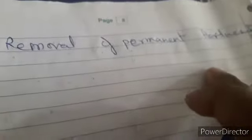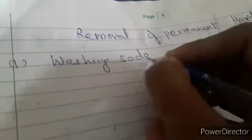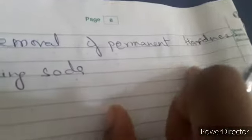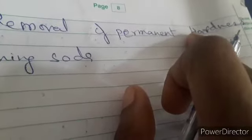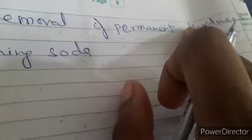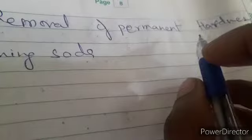We will focus on the removal of permanent hardness using the first method: washing soda. When you add washing soda to water containing permanent hardness, the chemicals responsible for permanent hardness are calcium chloride, calcium sulfate, magnesium chloride, and magnesium sulfate — these are the main salts responsible.